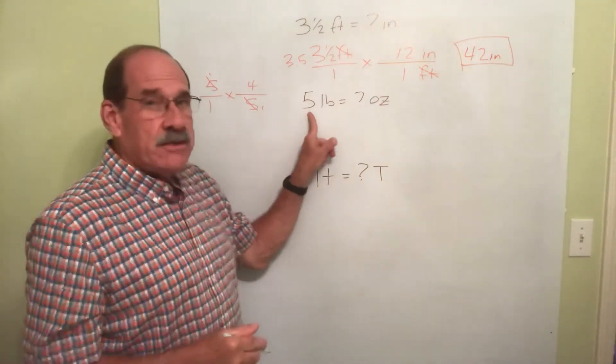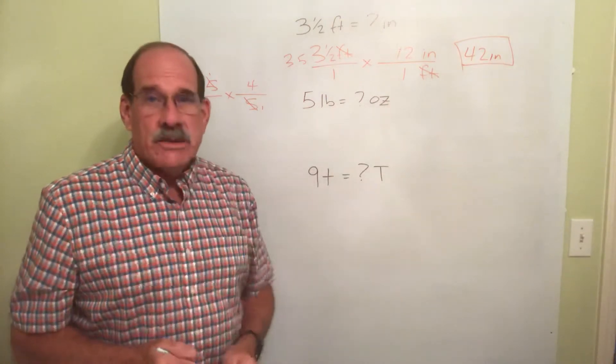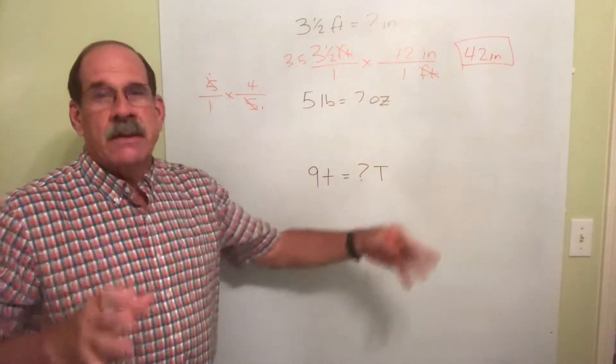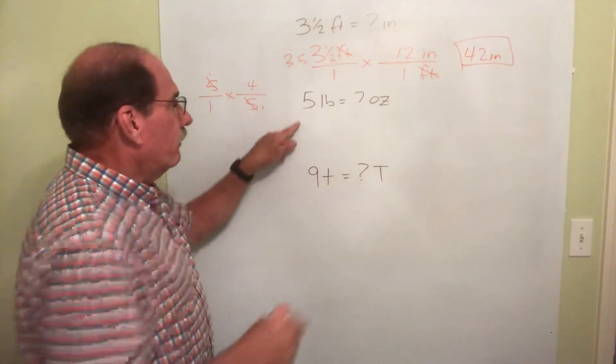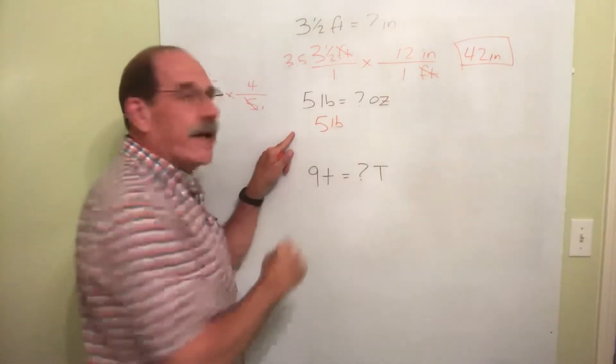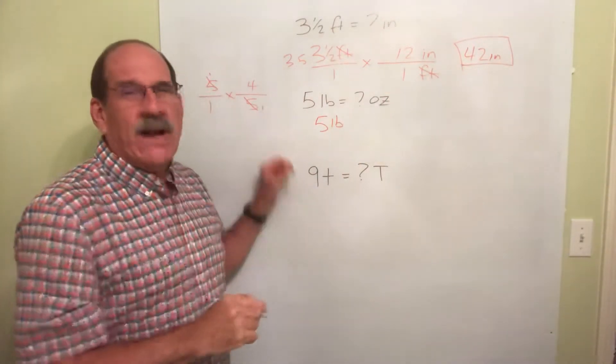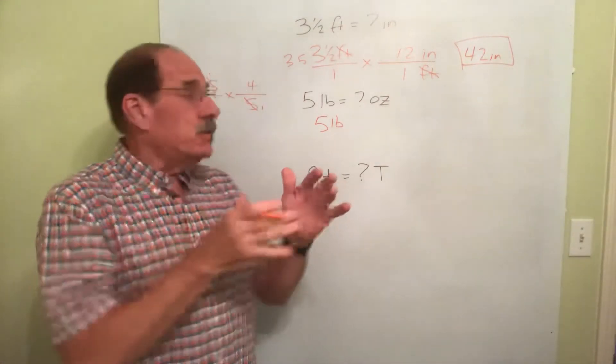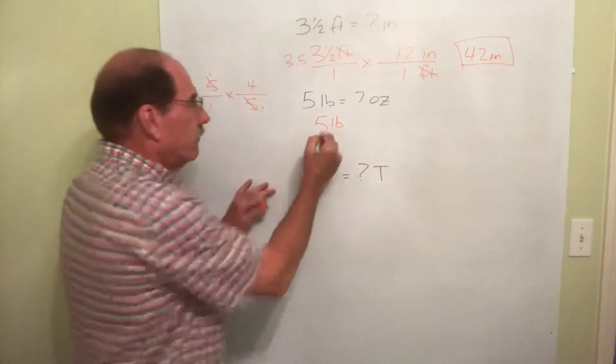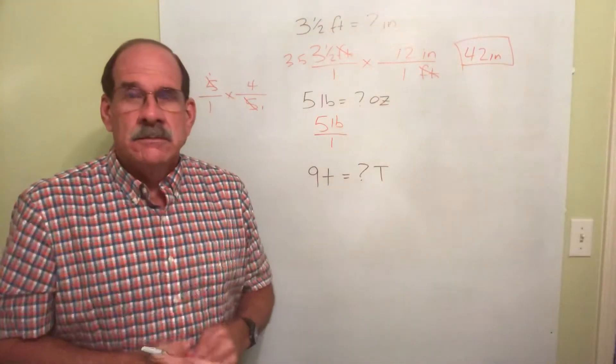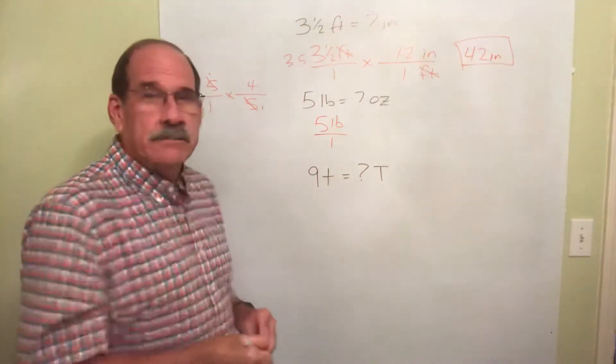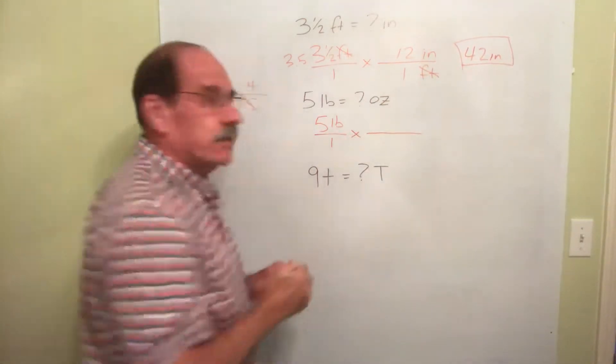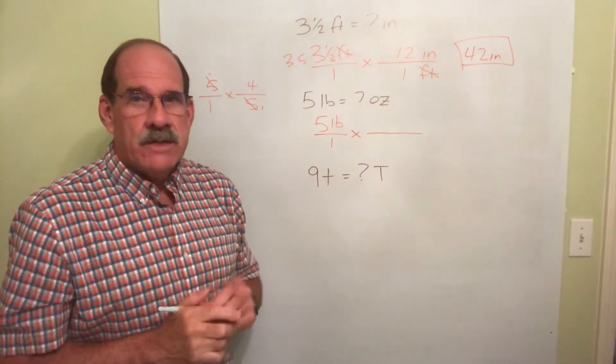Next one. 5 pounds. I want to know how many ounces is that. Let's just set it up first. The rule, the pattern, the steps. What I know: 5 pounds. Write it down. You should have that written down in your notes. Put it over 1. Your notes should look just like that. We're now going to multiply by another fraction. Your notes now should look just like this.